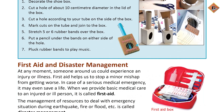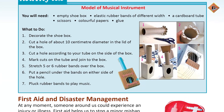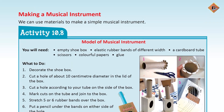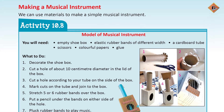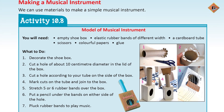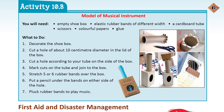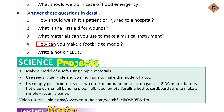What material can you use to make a musical instrument? Making of musical instruments mein: empty box, rubber bands, cardboard, scissors, colorful papers, aur glue ka use kar rahe the — toh bas yahan par unhi sab materials ko likhna hai. How can you make a footbridge model?